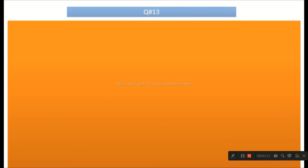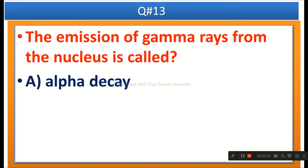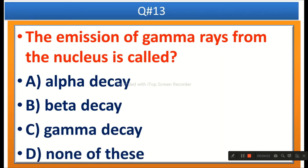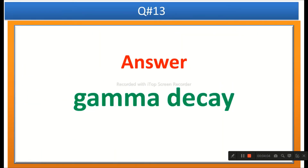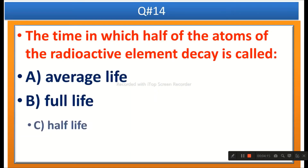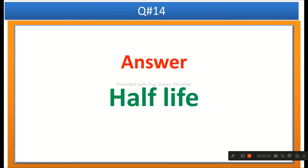The next question: The emission of gamma rays from the nucleus is called — options are alpha decay, beta decay, gamma decay, or none of these. The right answer is gamma decay. The next question: The time in which half of the atoms of a radioactive element decay is called — options are average life, full life, half life, or none of these. The right answer is half life.